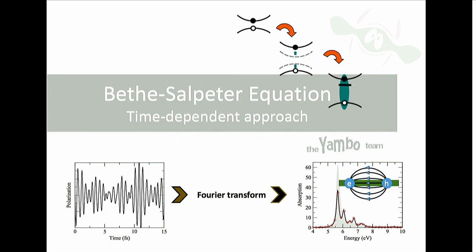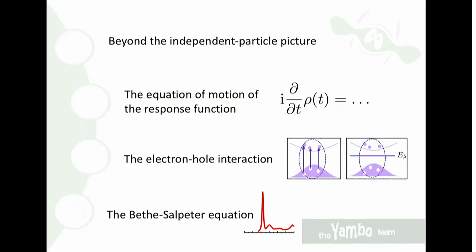The electron-hole interaction is taken into account in the Bethe-Salpeter equation, which we'll derive here using a time-dependent approach. We will concentrate on the response function of the electronic system after it has been excited by an external electric field like an optical laser. The time dependence shows several frequencies, and when you do the Fourier transform these frequencies appear and form the absorption spectrum. We will go beyond the independent particle picture, starting with the equation of motion for the density matrix and then for the response function.